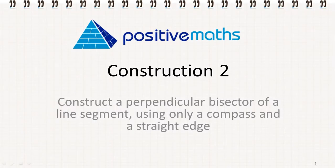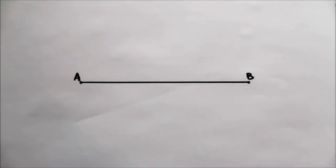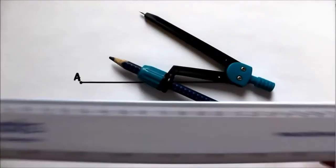Construction 2. Construct a perpendicular bisector of a line segment using only a compass and a straight edge. So here we have to construct the perpendicular bisector of the line segment AB using only a compass and a straight edge.